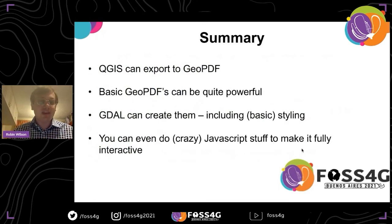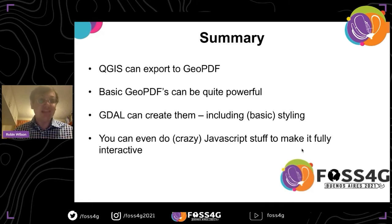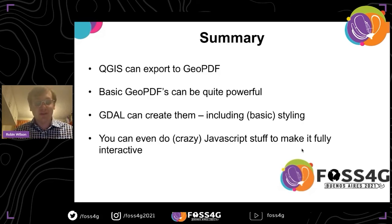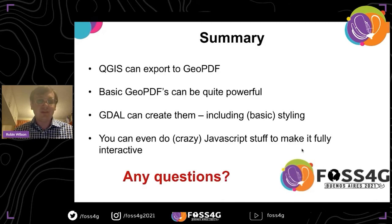In summary: QGIS can export to Geo PDF. Basic Geo PDFs can be quite powerful — just by ticking a box in QGIS, you get a lot of features for free. GDAL can create them, and GDAL can actually do vector styling, which I never knew. And you can even do JavaScript-based animation if you really want to take it to the extremes to make it fully interactive. Thank you very much. Any questions?